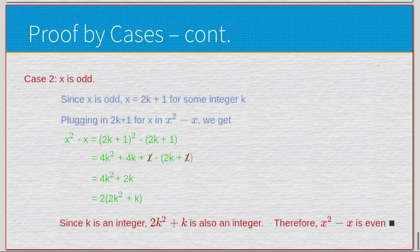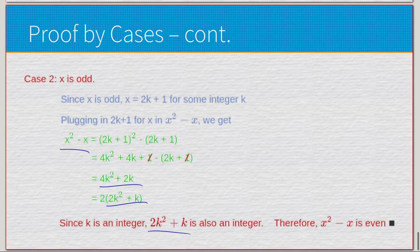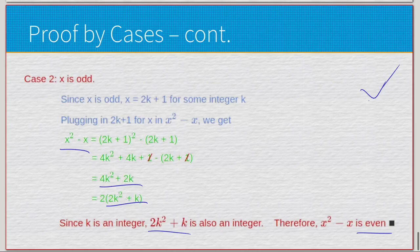Case 2: x is odd. Since x is odd, x = 2k+1 for some integer k. Plugging 2k+1 into x² - x gives (2k+1)² - (2k+1) = 4k² + 4k + 1 - 2k - 1. The 1s cancel, leaving 4k² + 2k. Factoring out 2 gives 2(2k² + k). No division, so 2k² + k is an integer, making this 2 times an integer — which is even. Both cases are proven, covering all integers. The original proof must be true.